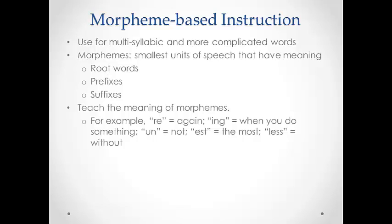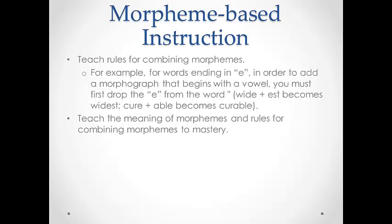The last type of spelling instruction that we will discuss today is morpheme-based instruction. We use this for multisyllabic and more complicated words and it is typically used with children in the intermediate grades in elementary — so probably third grade and up. Morphemes are the smallest units of speech that have meaning and include root words, prefixes, and suffixes. With this type of instruction, we would teach the meaning of morphemes, as in these examples of prefixes and suffixes. Once children understand the meanings of these morphemes, you can begin to teach them the rules that apply for combining them. If we teach both the meanings and the rules, children will begin to master the spellings of even more complicated words. Obviously there's a great deal more to say about morpheme-based instruction, but for the purposes of this lecture, I just wanted to give you a brief introduction.